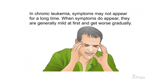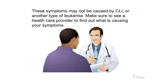In chronic leukemia, symptoms may not appear for a long time. When symptoms do appear, they are generally mild at first and get worse gradually. These symptoms may not be caused by CLL or another type of leukemia — make sure to see a health care provider to find out what is causing your symptoms.